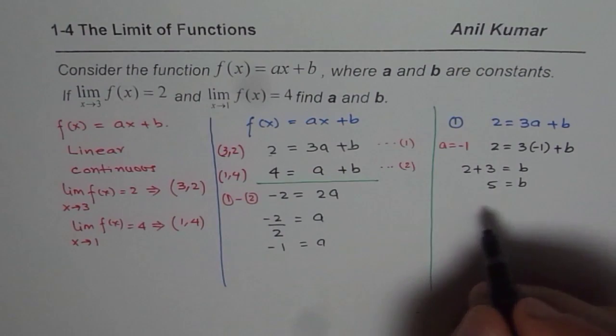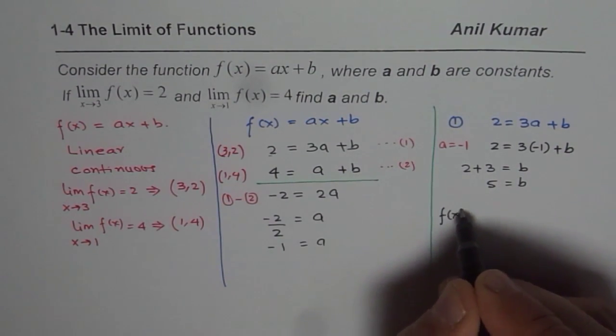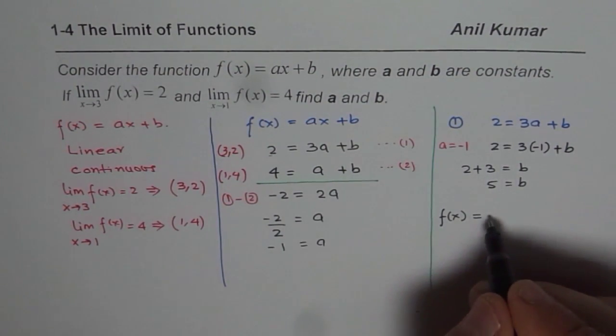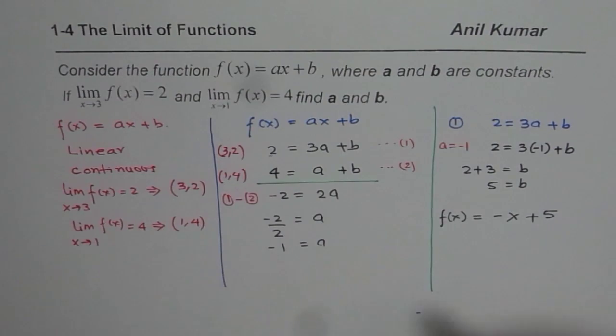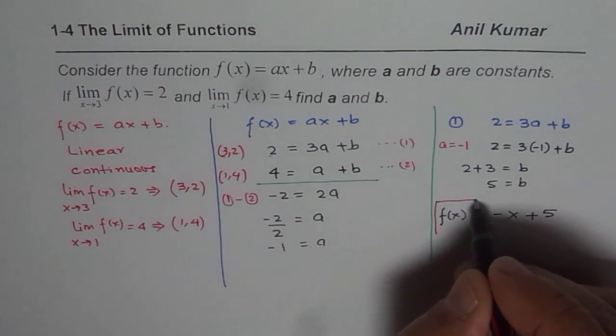And now since we know a and b, we can write f(x) equals a is minus 1, minus x plus b is 5. So that becomes our function f(x). So we found both the values.